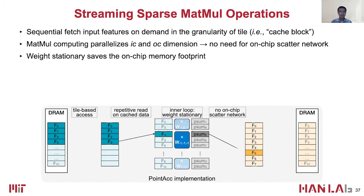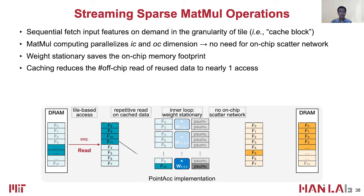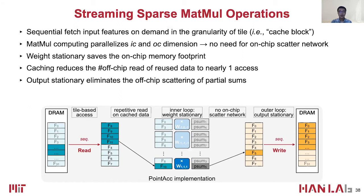By configuring the input buffers as cache, Point Tech reduces the number of off-chip reads of reused data to nearly one time. Finally, Point Tech uses output stationary for the outer loop nest to eliminate the off-chip scatter of partial sums. That is, it will not swap out the output features before it traverses all neighbors and all input channels.